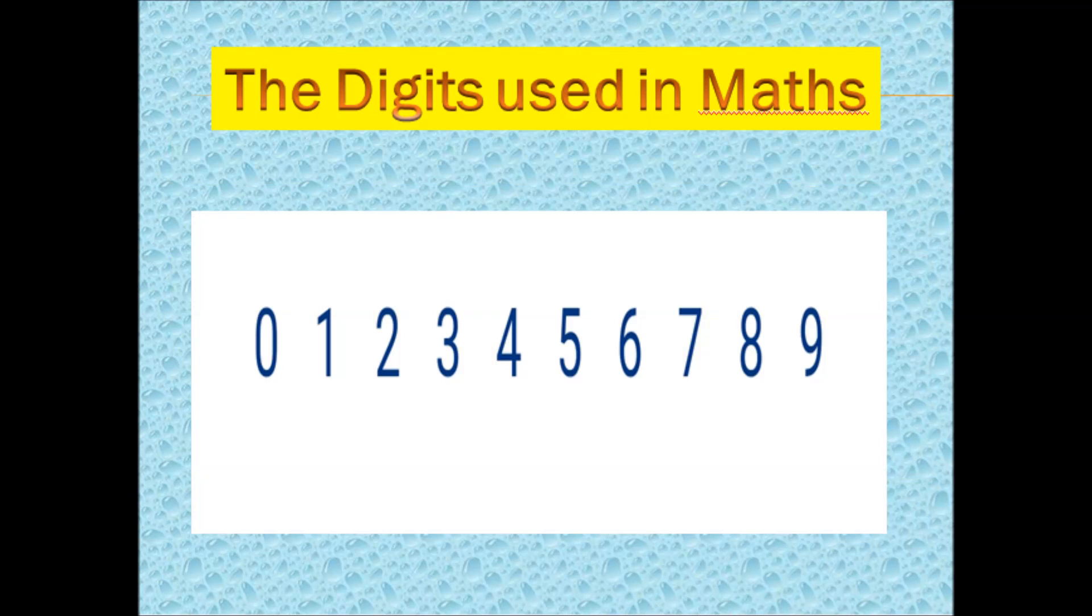We all know the digits used in maths are 0, 1, 2, 3, 4, 5, 6, 7, 8 and 9. These 10 digits are used to form different numbers.